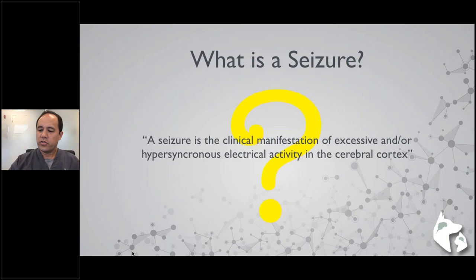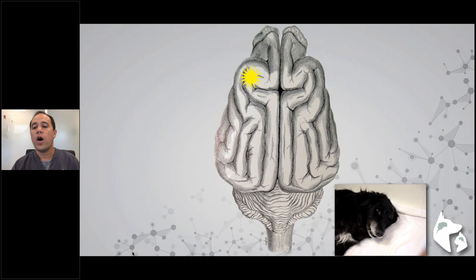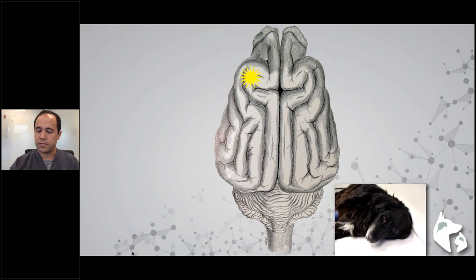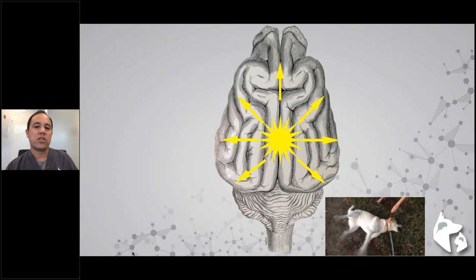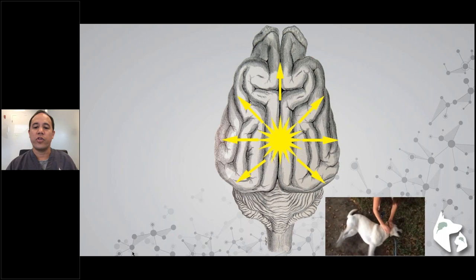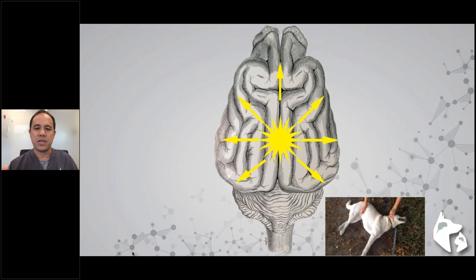Seizures can be focal or generalized. A focal seizure occurs when the excessive electrical activity is limited to one region of the cerebral cortex — we might see rhythmic contractions of one body part or one side of the face, and consciousness may or may not be altered. Generalized tonic-clonic seizures affect the entire cerebral cortex; patients lose consciousness, may paddle, jaw chomp, salivate, urinate, or defecate, lasting seconds to minutes. Most dogs act abnormal just before the seizure and are disoriented afterward.